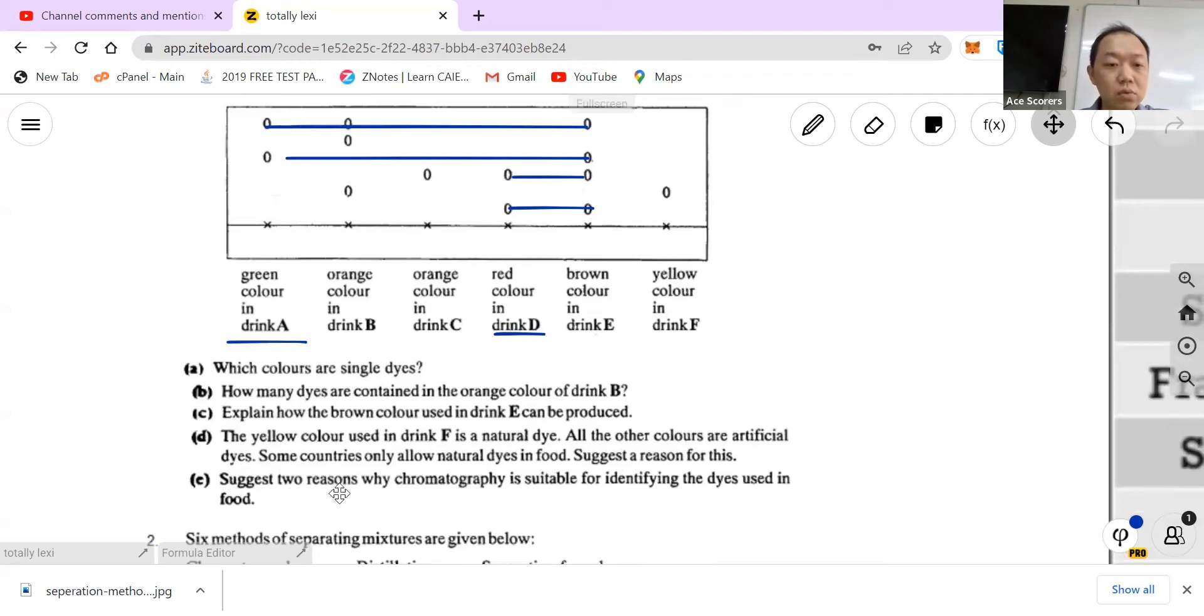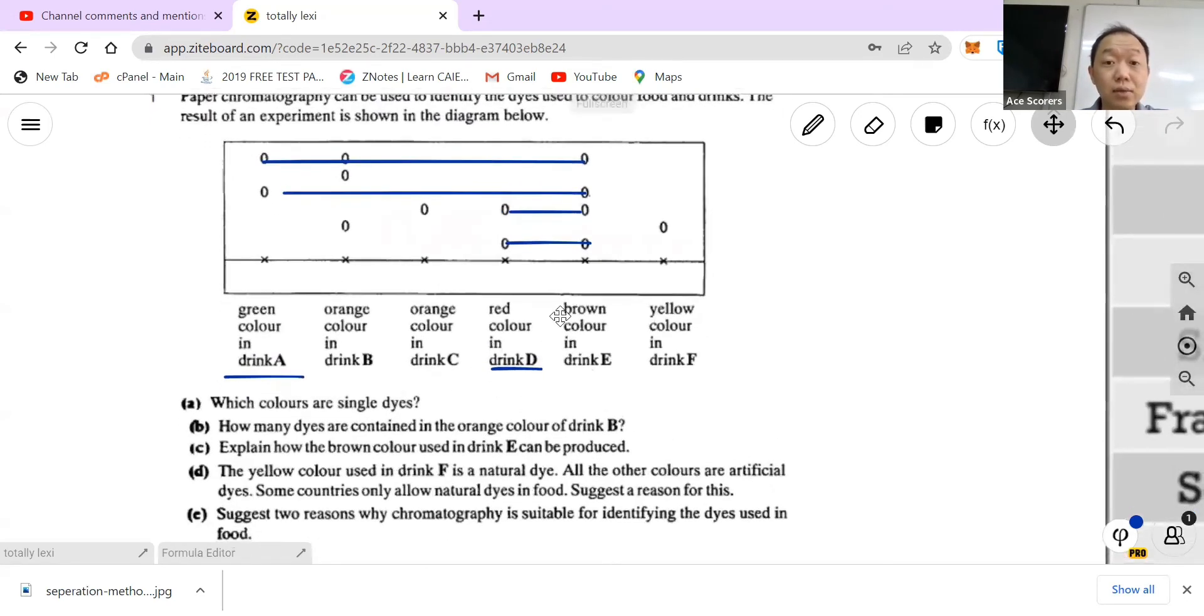So two reasons why chromatography is suitable for identifying the dyes used in food. Usually for chromatography you only need a small amount of sample. You don't need a lot to carry out the experiment.